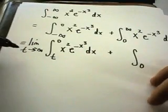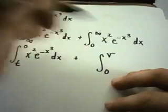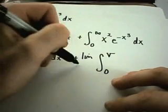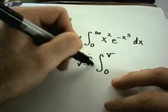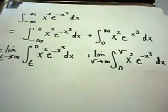This one I'll have zero, and since I've already used t over here, we'll call it maybe v. So we'll look at the limit as v goes to positive infinity, x squared e to the negative x cubed dx.